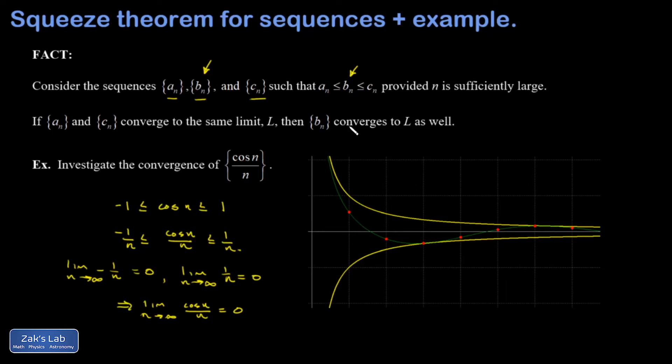I have my upper bound function, F of N is one over N, or I could say F of X is one over X. I have my lower bound function, let me say that's G of X is negative one over X. And in between, this green continuous function is cosine X over X.